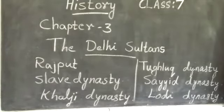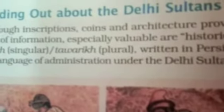We know about Delhi Sultans from inscriptions, coins, and architecture, which give a lot of information. And also from Tawarikh — these were written in the Persian language to know about the administration under the Delhi Sultans. The authors of Tawarikh were learned men, secretaries, administrators, poets, and courtiers.